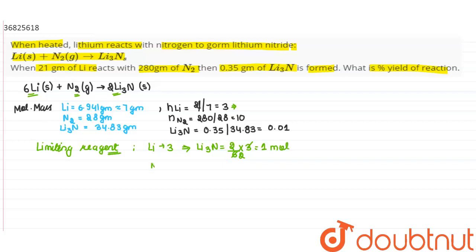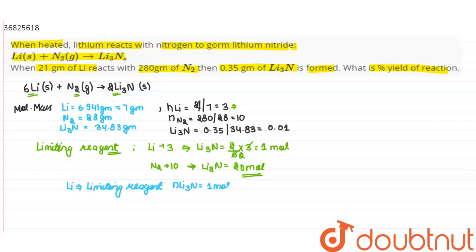If we take nitrogen: 1 mole of N₂ gives 2 moles of lithium nitride. So lithium is the limiting reagent, giving a theoretical yield of 1 mole of lithium nitride.